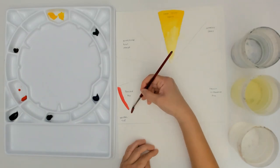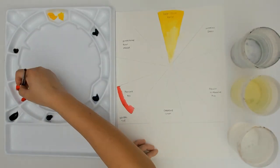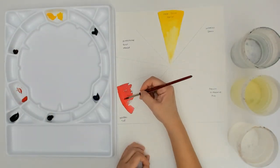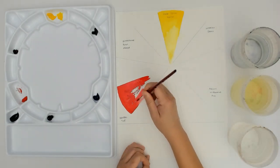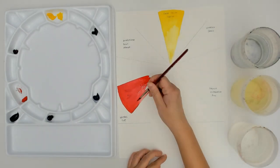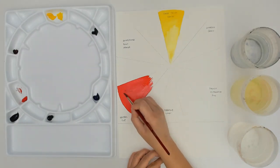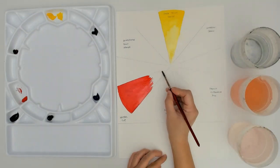Cleaning my brush and grabbing some red and doing the same thing on this side. And again, just watering it down, adding more water as I get towards the center.